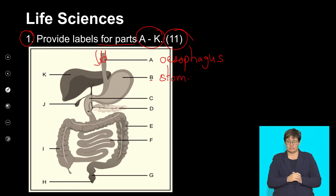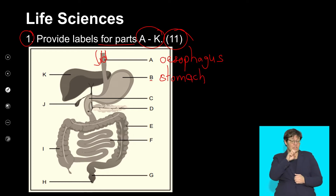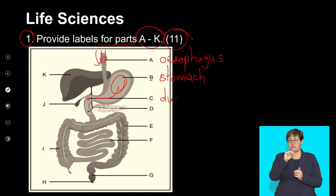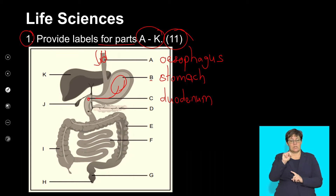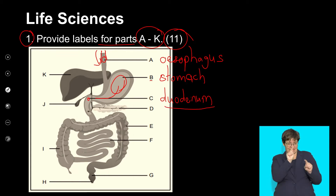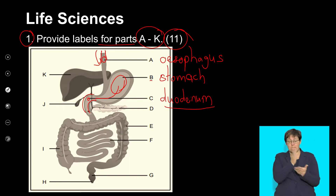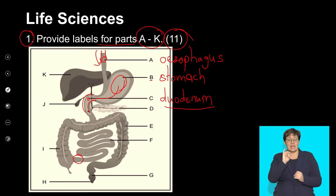The food then mixes with the gastric juices and moves down the first part of the small intestine, which is labeled C — specifically the duodenum. It's important that you are able to differentiate the different parts of the small intestine: the first part being this C-shaped structure called the duodenum, the middle part called the jejunum, and then the last bit, the ileum, which connects to the large intestine.